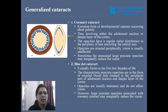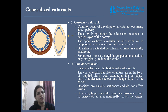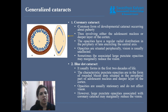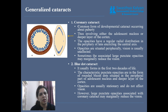Generalized cataract is divided into four parts. First is coronary cataract, again a developmental cataract, most commonly occurring at the age of puberty, involving the adolescent nucleus. The embryonic nucleus, fetal nucleus and infantile nucleus are clear, but opacities appear in the adolescent nucleus in a radial pattern. It does not cause much vision loss because the large part of the nucleus is clear and only the adolescent part is opaque.